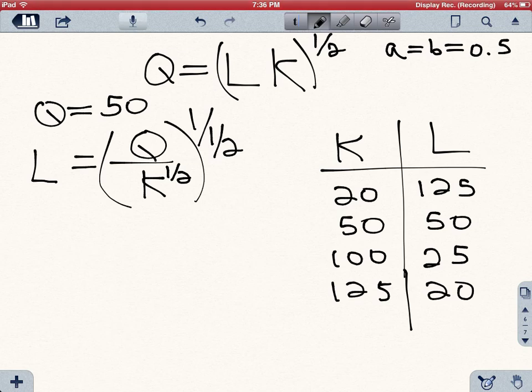So what does this mean? It means that you can produce 50 units of output if your production function is this way. You can produce 50 units of output using 20 units of capital and 125 units of labor, or you can produce them using a little more capital, 50 units of capital, and less labor, 50 labor.